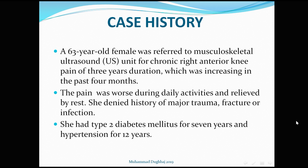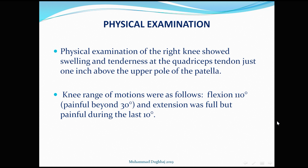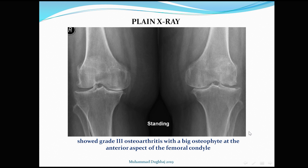Examination showed swelling and tenderness at the quadriceps tendon just one inch above the upper pole of the patella. Knee range of motion: flexion 110 degrees, painful beyond 30 degrees; extension was full but painful during the last 10 degrees. X-ray showed grade 3 Kellgren classification in the right knee and grade 2 in the left knee.